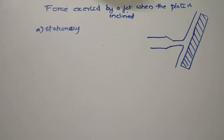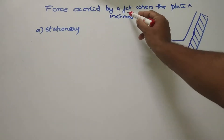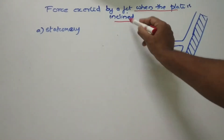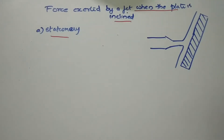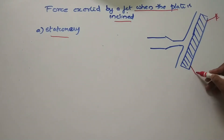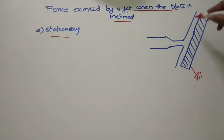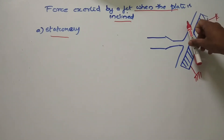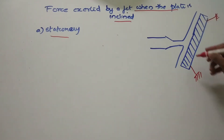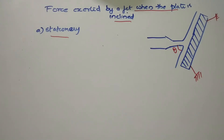The next case we are going to discuss is the force exerted by a jet when the plate is inclined. The first case is the plate stationary and fixed. The plate is straight, and the angle is theta.